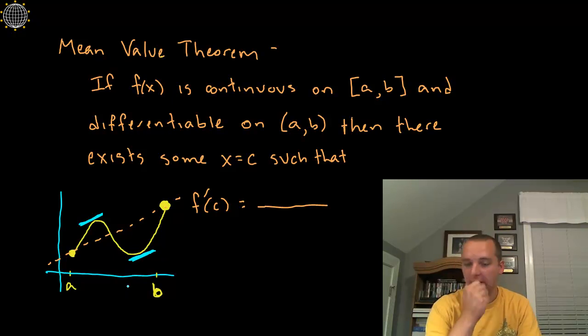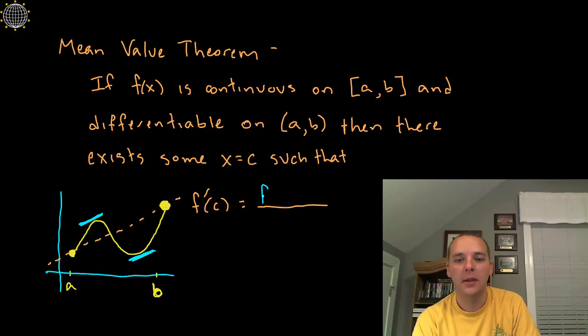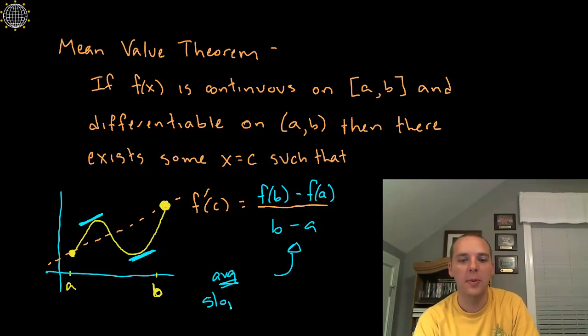So the end result that we're looking for is there exists some at least one value such that the derivative there equals f of b minus f of a divided by b minus a. And what that is giving right there on the right hand side is the average slope between those two points.